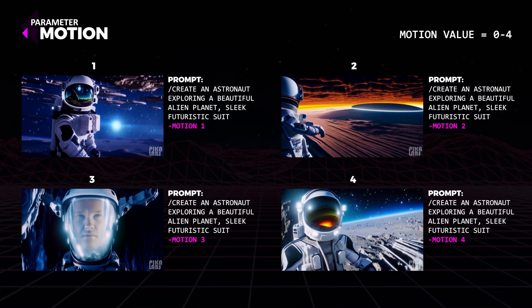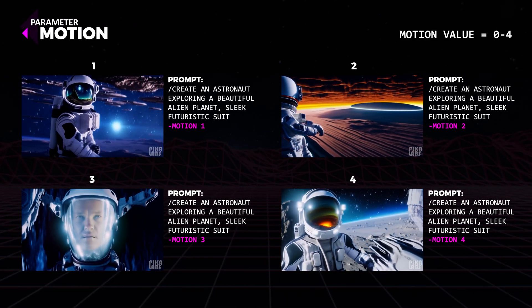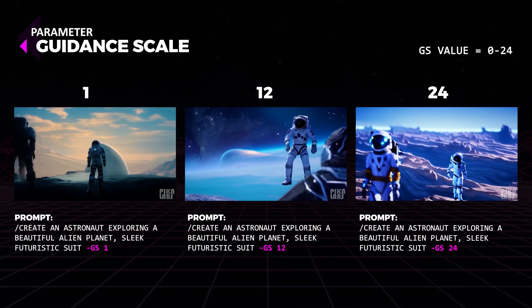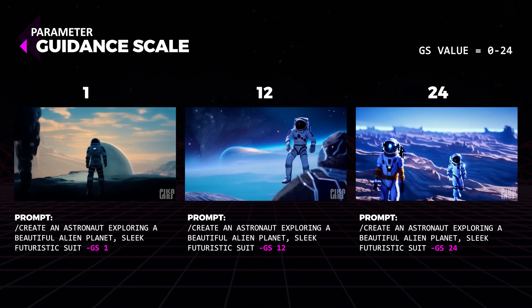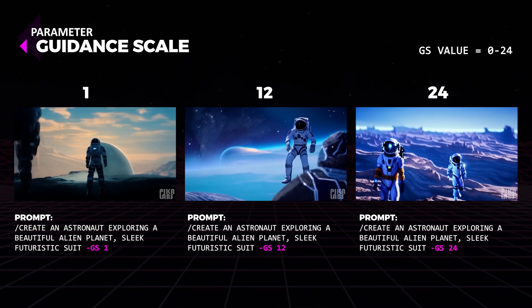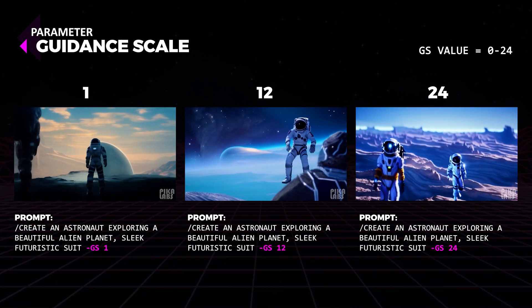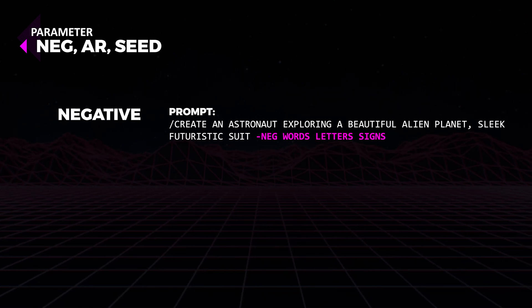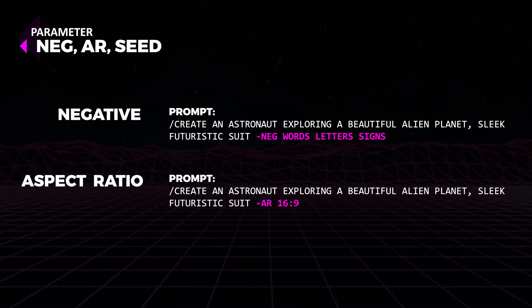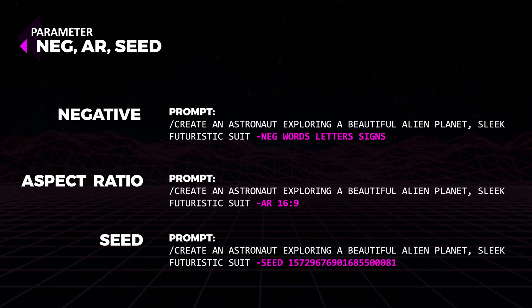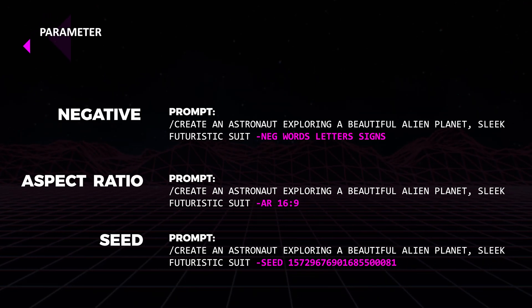The motion parameter controls the strength of the motion in the video — the higher the value, the stronger the motion. The motion value starts at 0 and goes up to 4, with a default of 1. The guidance scale controls how closely the video is related to the text; the higher the value, the closer it will be to the actual inputted text prompt. 0 is the lowest and 24 is the highest, where 12 is the default value. Notice the difference? You also have your negative prompts where you input things you don't want the video to have. You have your aspect ratio to change the width and height of a video. And you have seed, where you can generate videos more consistently by using the video's seed number found at the end of its file when you download it.